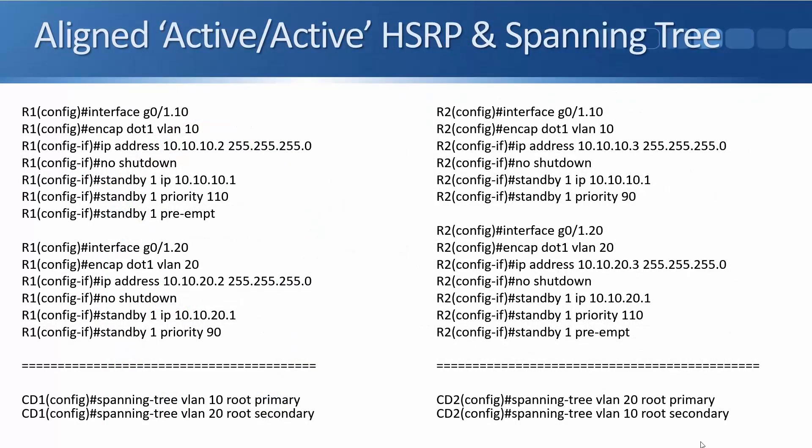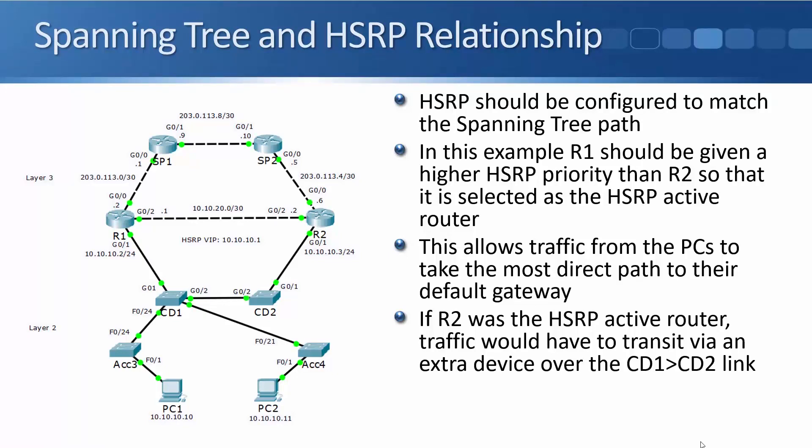Let's look at an example of how we could do load balancing with aligned HSRP and spanning tree configuration. Going back to the topology diagram, PC1 has IP address 10.10.10.10 and it's in VLAN 10. For this example, imagine that PC2 is in VLAN 20 with IP address 10.10.20.10. I'm going to configure it so that traffic for VLAN 10 from PC1 goes up through the path via CD1 and R1, and traffic from PC2 in VLAN 20 goes up via the path via CD2 and R2. So half my traffic goes along the left side path and half along the right side path, giving me load balancing.